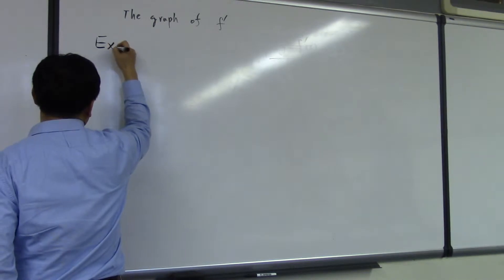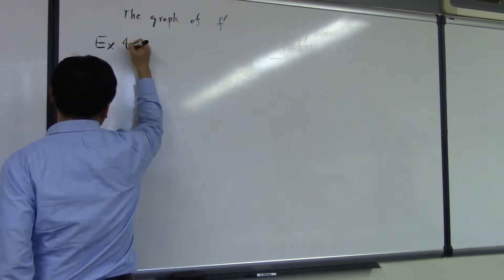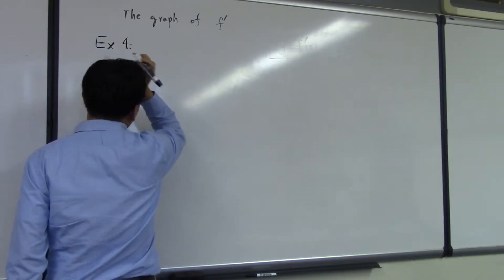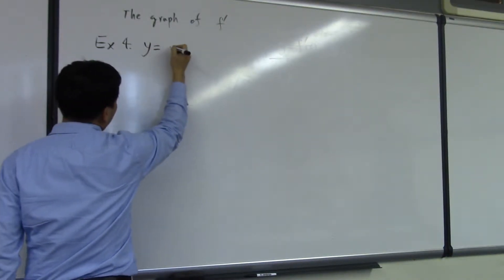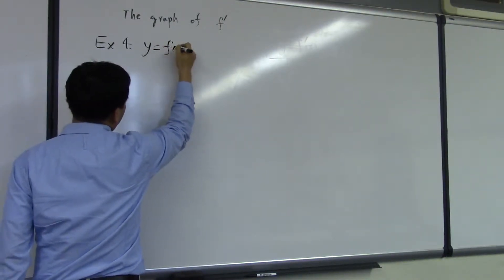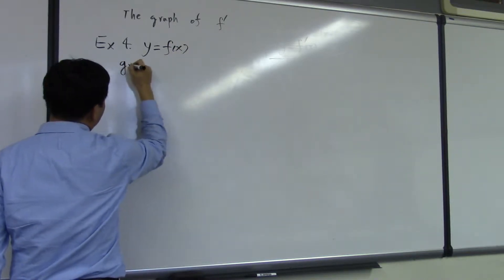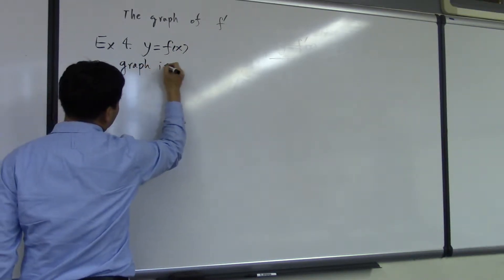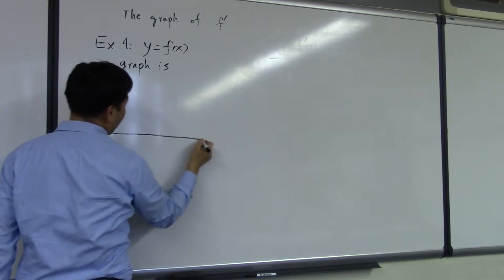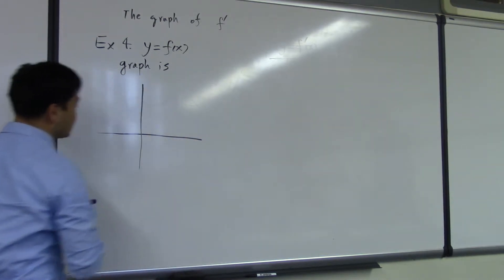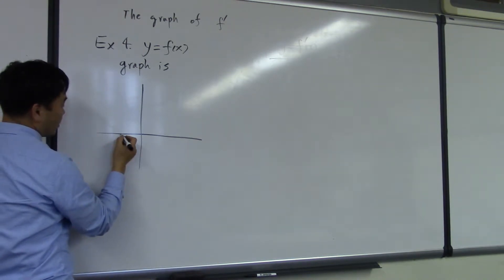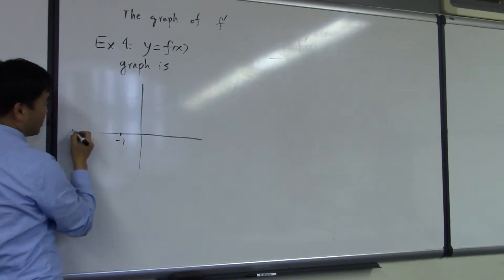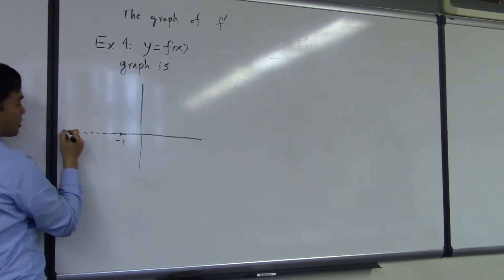When you have asymptotes, it gets more interesting. So let's say y is equal to f of x. Let's say at negative 1, there's a horizontal asymptote. It comes like that.